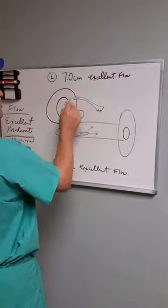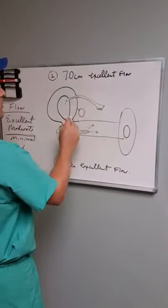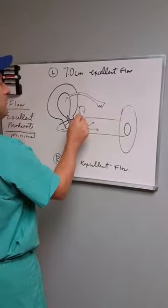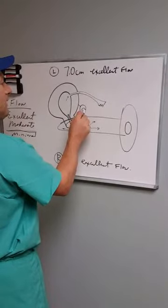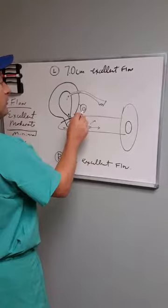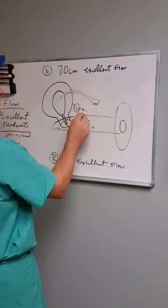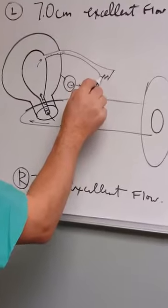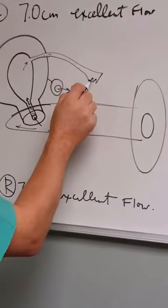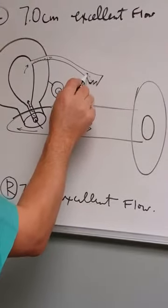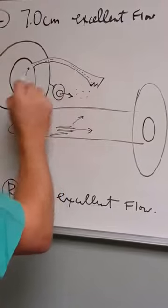And as that sperm goes down the tube, if there's an egg available, it will fertilize the egg in most cases. The egg is released after a follicle is developed in the ovary through ovulation. The egg is released and it floats around the belly until it's picked up by the fimbria. Once it's picked up by the fimbria, it enters the tube and it will start making its way down as well.